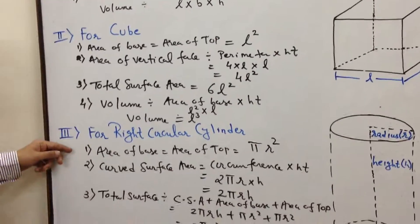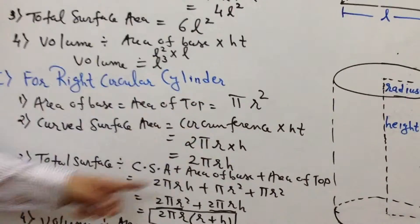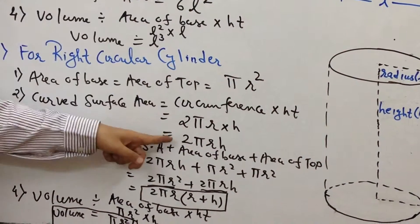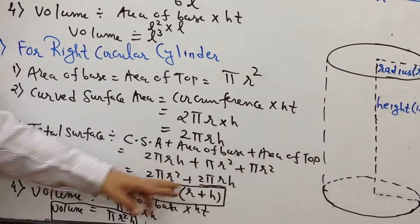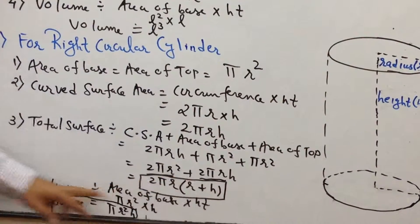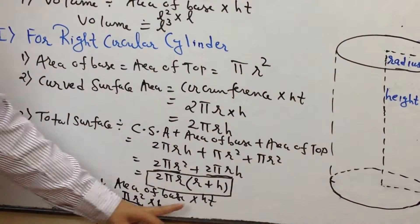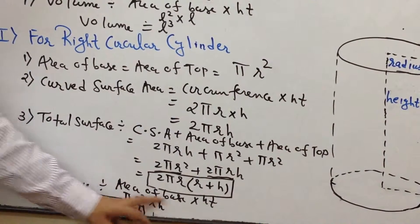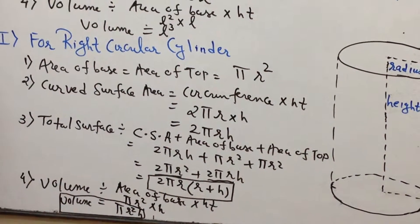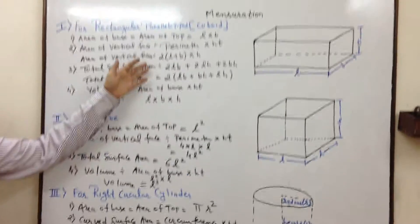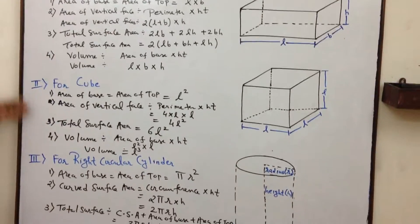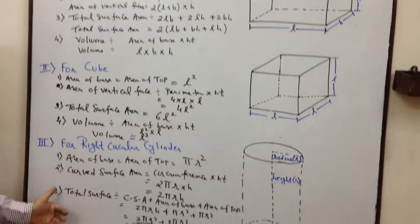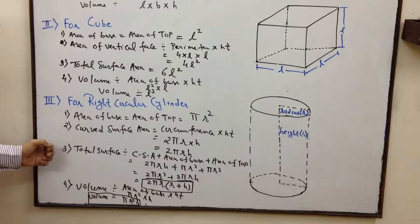Let's refresh once again. Area of base equals area of top, which is πr². Curved surface area: the formula is 2πrh. Total surface area: the formula is 2πr(r + h). And volume, using area of base into height, gives πr²h. In this way, we went with all three cases — rectangular parallelepiped, cube, and right circular cylinder — and we have seen the formulas, which are absolutely on a parallel line. This is how we derived the formulas in mensuration. Thank you.